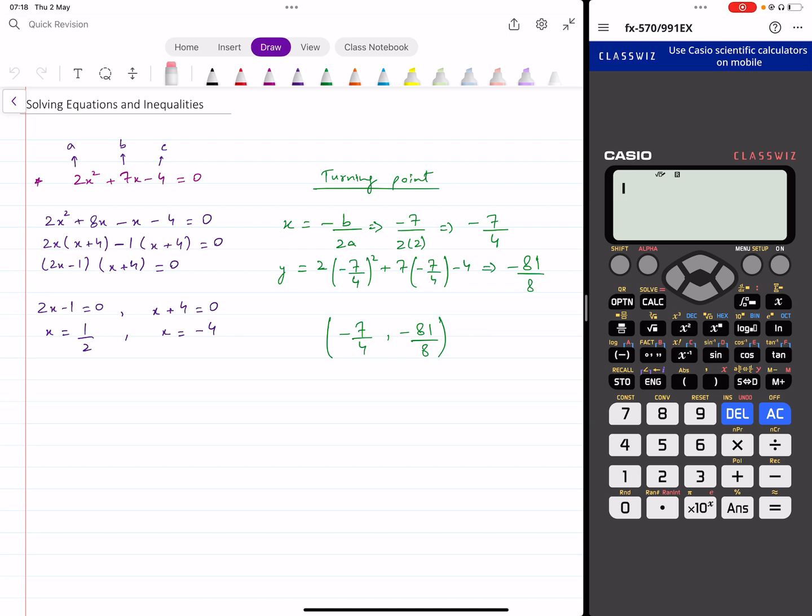So let's start with the quadratic function first of all. If you have a quadratic equation that looks like this, 2x squared plus 7x minus 4 equals 0, you can actually solve this equation directly on your calculator and find the final answers.